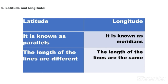Number 2: Latitudes and Longitudes. I have done it in a tabulated form. Number 1: Latitudes are also known as Parallels and Longitudes are also known as Meridians. The length of latitude lines are different, whereas the length of the lines are the same in the case of Longitudes.